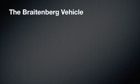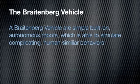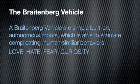At the beginning I want to give you a short introduction to the Breitenberg vehicle. A Breitenberg vehicle is a simple configured robot which is able to drive autonomously. With some adjustments of the hardware, complicated human-similar behaviors can be simulated. These are love, hate, fear, and curiosity.